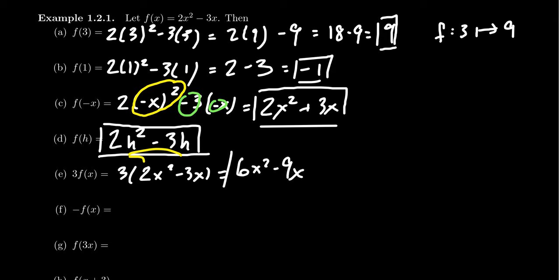So we can multiply it by three. What does it mean to do negative f(x)? That just means negative one times 2x² - 3x. Again, you would distribute the negative sign and get -2x² + 3x, switch the sign there.